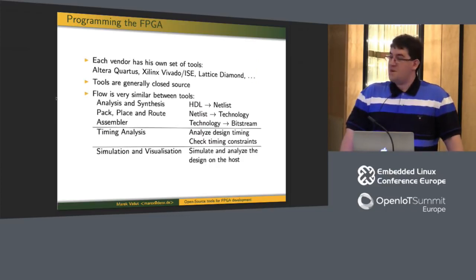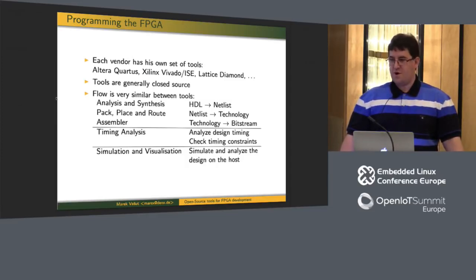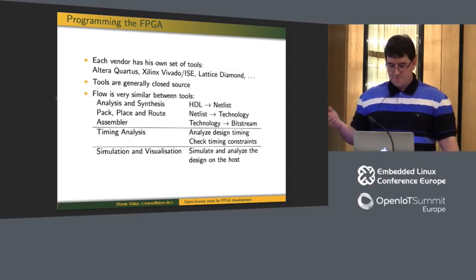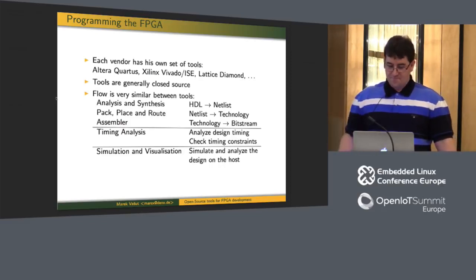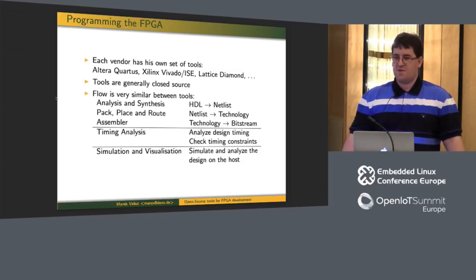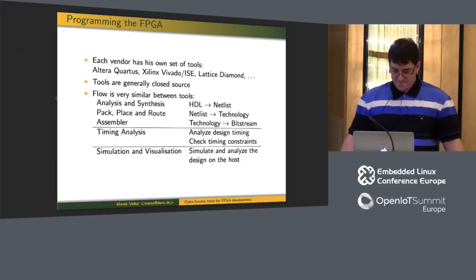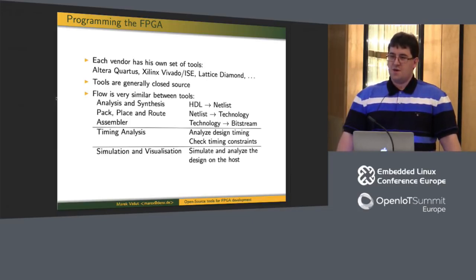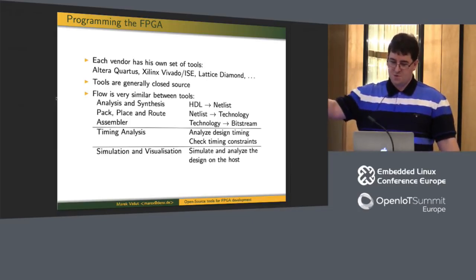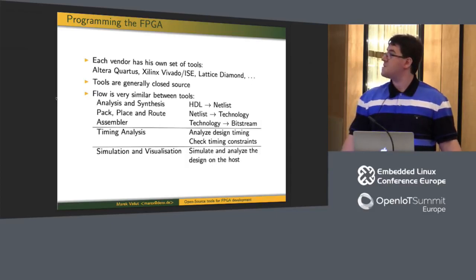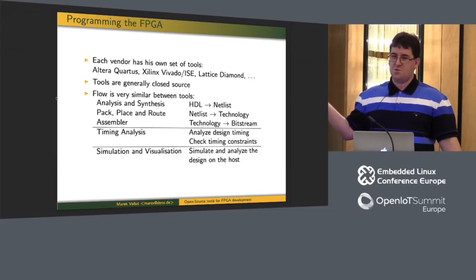Now let's look at how we program the FPGA — how we put content into it. Each vendor provides a toolchain. These are typically proprietary, closed-source, big packages of stuff, typically in the ballpark of tens of gigabytes to download. Altera has Quartus, Xilinx has Vivado and ISE. If you analyze what the vendor tools are really doing to get from source to bitstream, you can divide it into three steps: analysis and synthesis, then place and route, and finally the assembler.